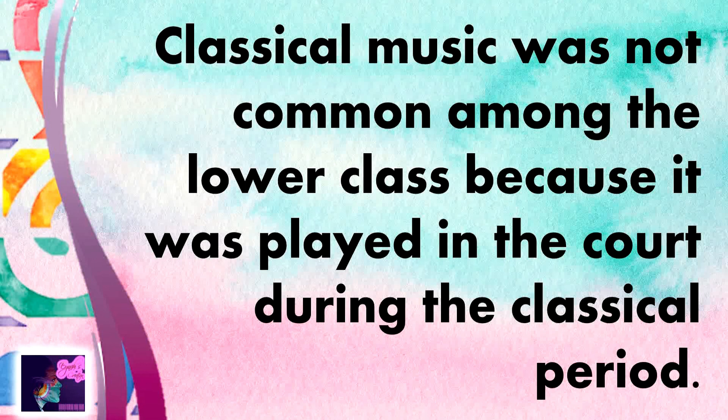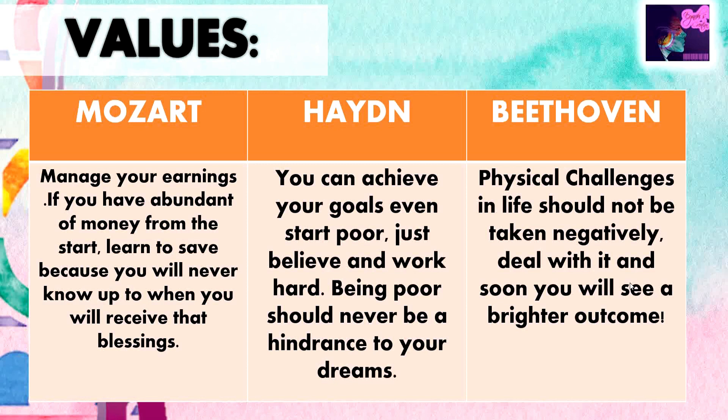Let's summarize the values we've learned from our composers' lives. For Mozart: manage your earnings. If you have an abundance of money, learn to save because you never know how long that blessing will last. For Haydn: you can achieve your goals even when you start poor — just believe and work hard; being poor should never be a hindrance to your dreams. And for Beethoven: physical challenges in life should not be taken negatively — deal with it, and soon you will see a brighter outcome. Those are the wonderful values from our composers.